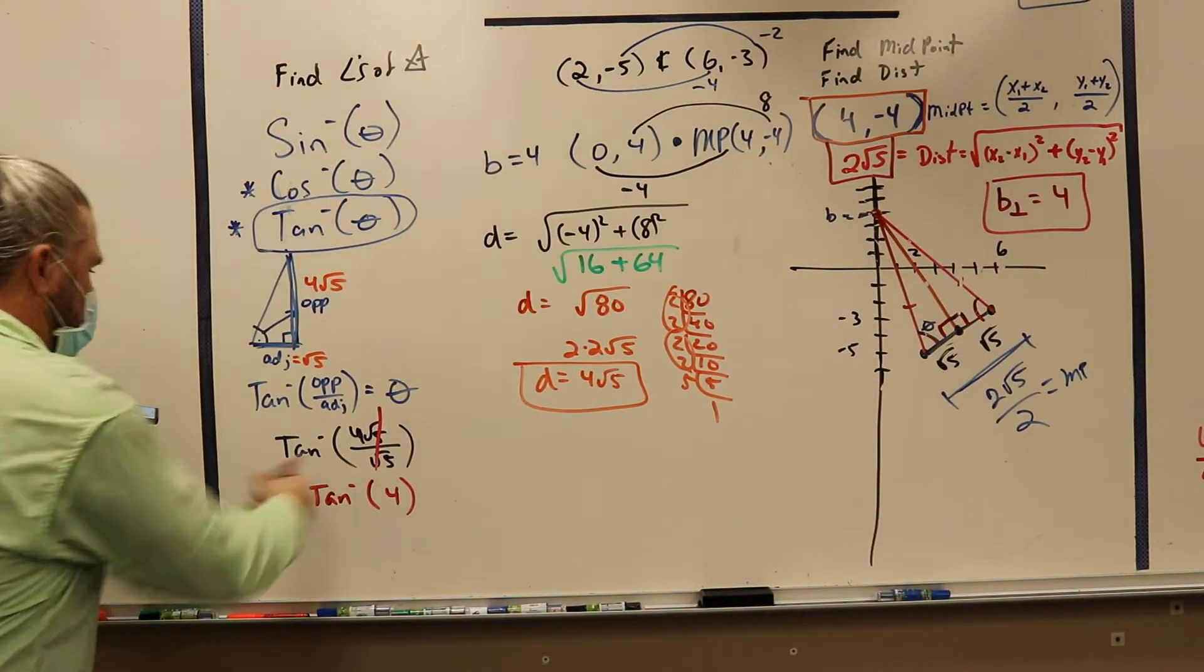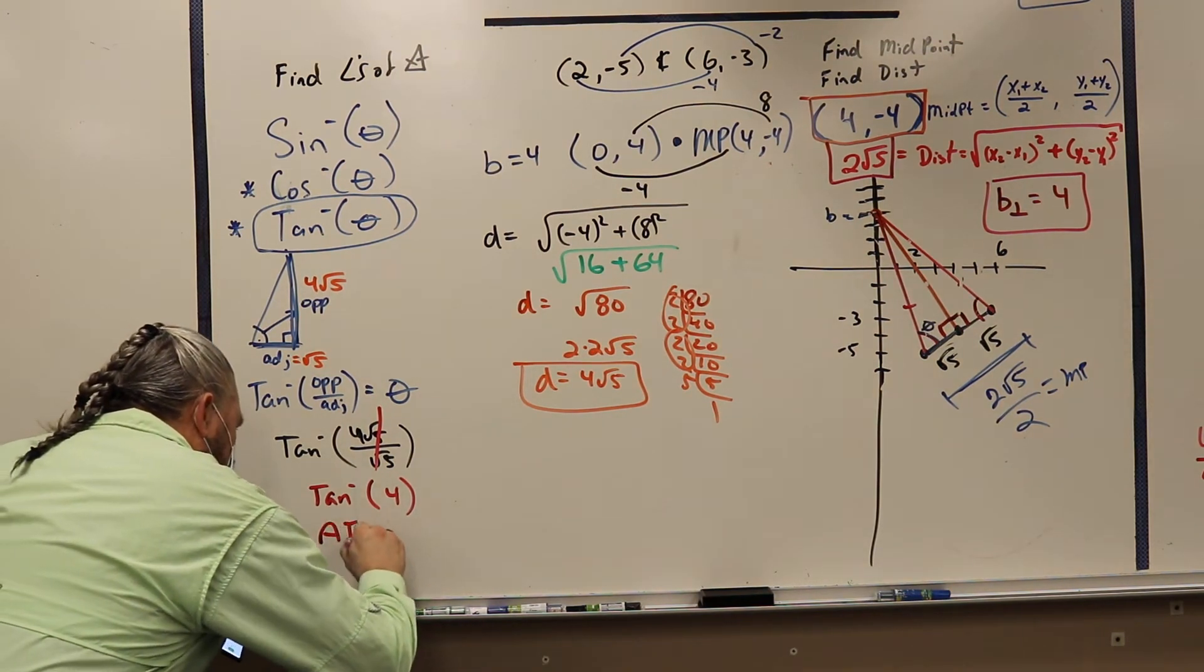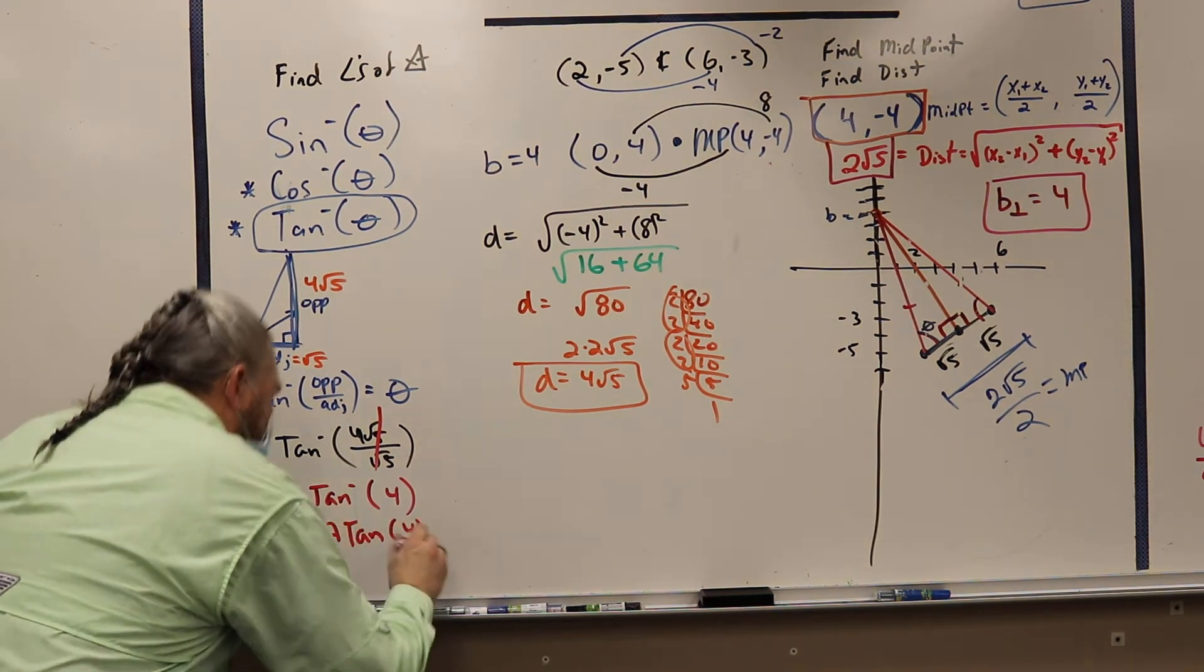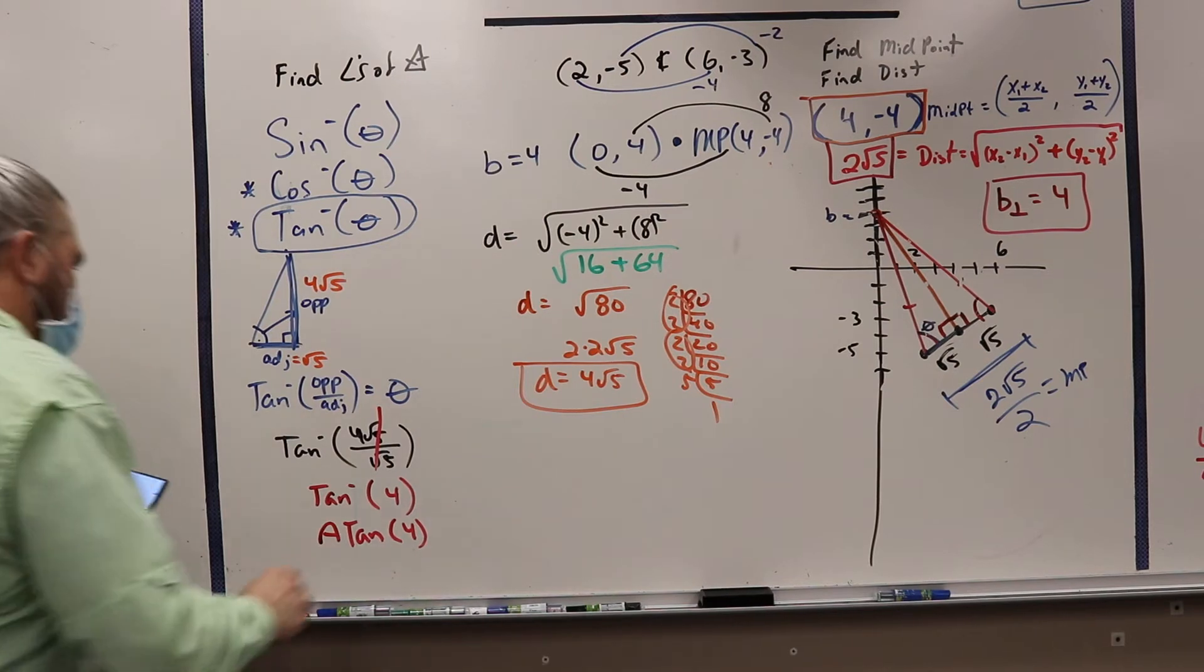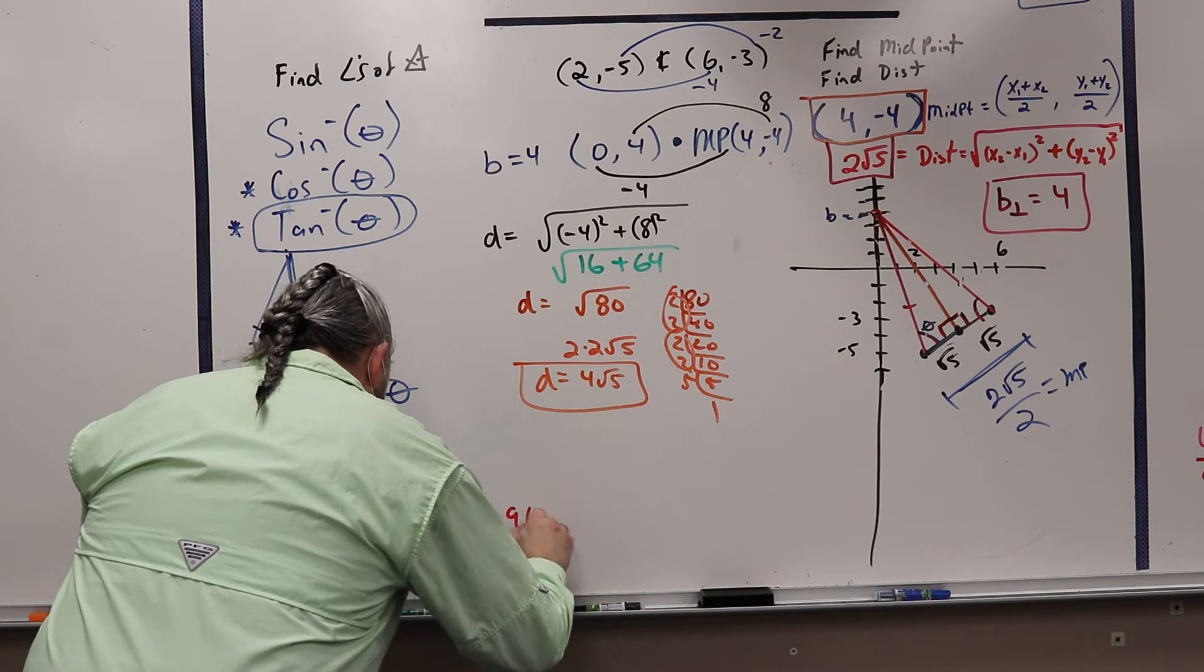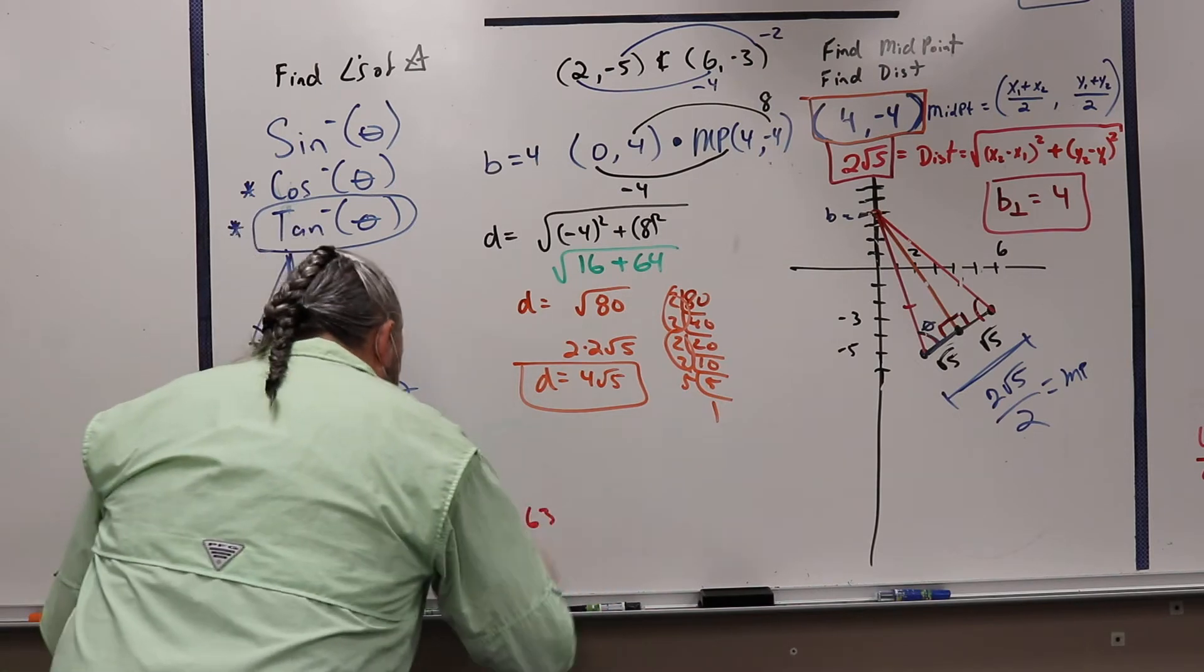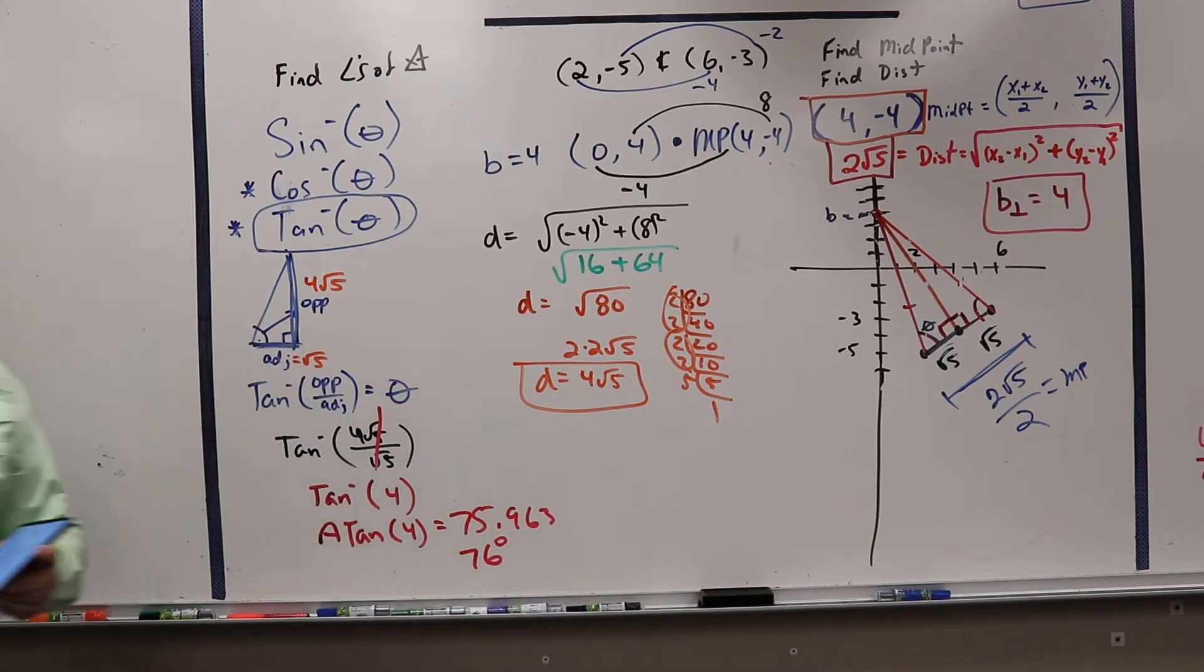So I plugged in tangent inverse, but then it comes up as A tan. And that stands for arc tangent, okay? So they're the same thing. And it equals 75.963 blah blah blah. So what I'm going to say is just round it off to the nearest degree, 76 degrees. Is that cool? Cool.